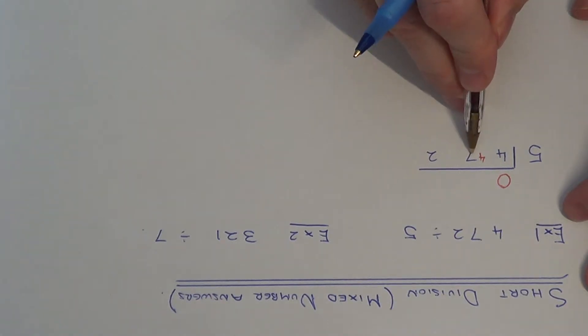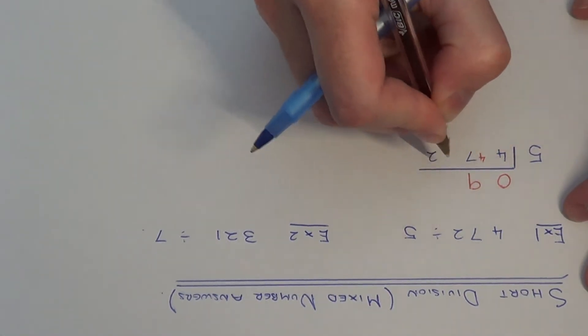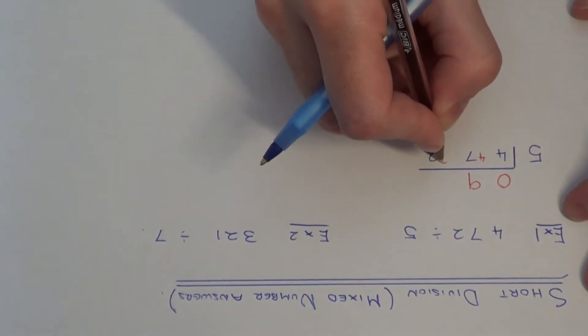Next we have 47 divided by 5. This goes 9 times and the remainder is 2. So put this by the next digit.